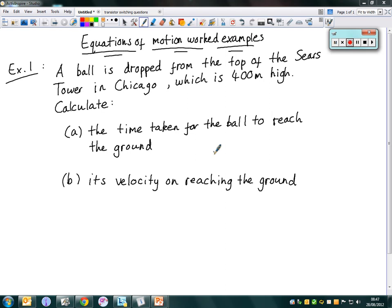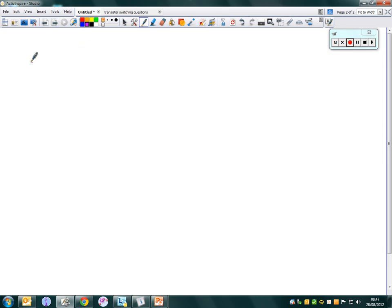So we'll start off with trying to calculate the time taken for the ball to reach the ground. The first thing I would advise that you do in any equation of motion example, so in other words anything with a calculation on something that moves, is to jot down SUVAT. That's all the variables that you've got in the three equations of motion that we talked about yesterday.